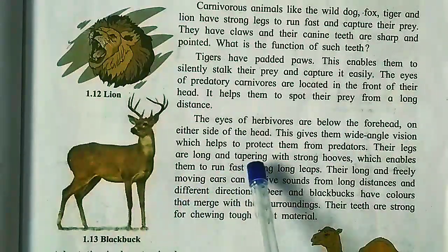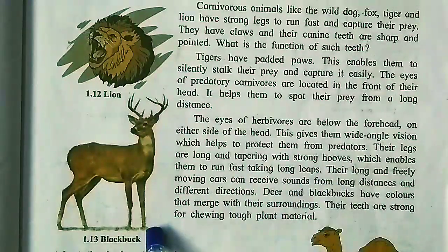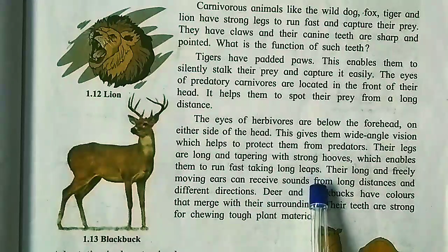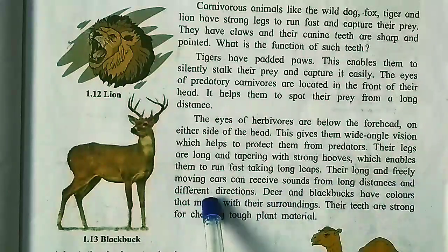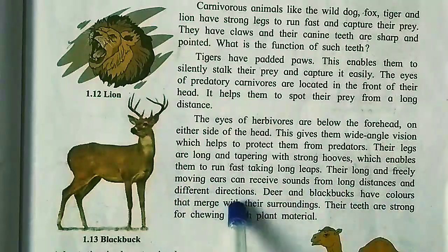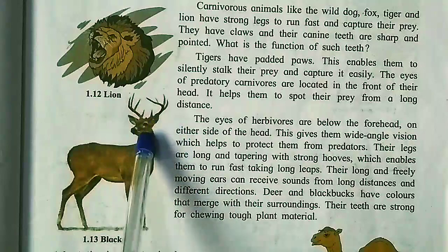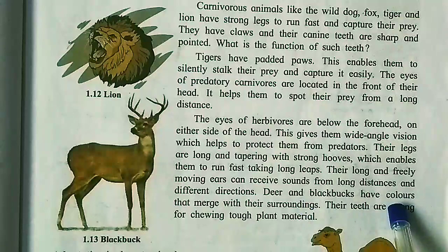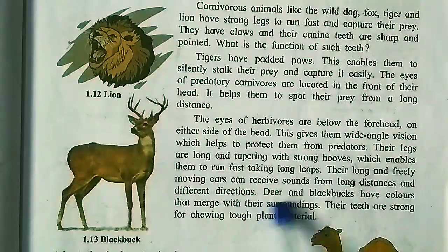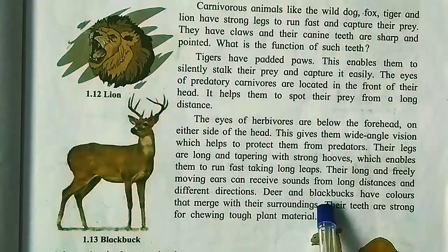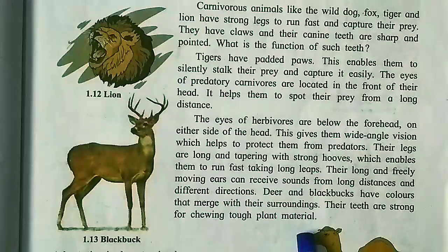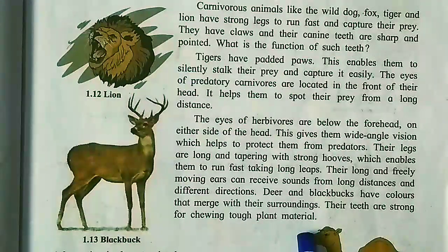Herbivores' hooves — the last part of their legs — are strong and allow them to take long leaps. Their long and freely moving ears can receive sound from long distances and different directions simultaneously. Deer and black buck have colors that merge with their surroundings. Their teeth are strong for chewing tough plant material. These are the adaptations of forest and grassland animals — both carnivores and herbivores.